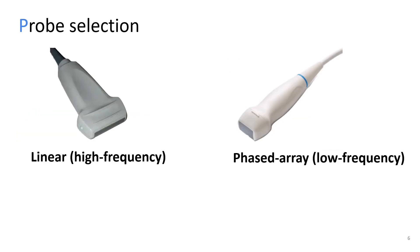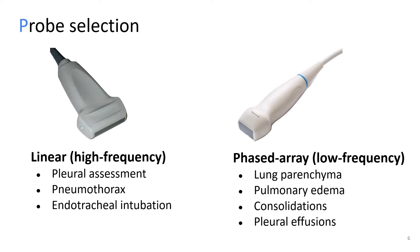Regarding probe selection, the linear high frequency probe should be used for pleural assessment, pneumothorax, and endotracheal intubation. Whereas the phase array low frequency probe should be used to assess the lung parenchyma, pulmonary edema, consolidations, and pleural effusion.